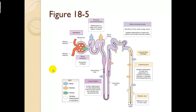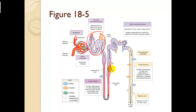After the proximal convoluted tubule, filtrate enters the loop of Henle, composed of a descending and ascending limb. The descending limb moves water out by movement of sodium ions; it is permeable to water. The ascending limb is not permeable to water. The ascending limb is where the drug furosemide works — by keeping more sodium in, water follows sodium, thereby making more urine available. In the glomerulus, afferent comes in, efferent exits; filtration starts, and water and ions are captured in the proximal convoluted tubule.